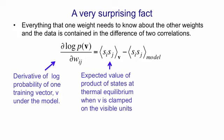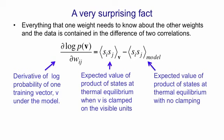That is, how often are i and j on together when v is clamped in the visible units and the network is at thermal equilibrium, minus the same quantity but when v is not clamped on the visible units.